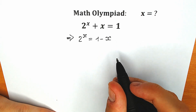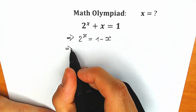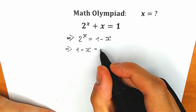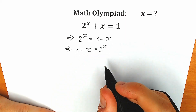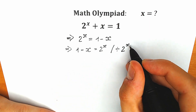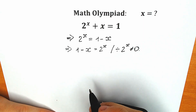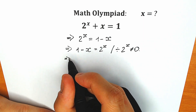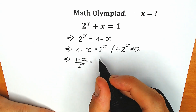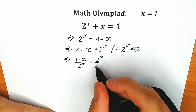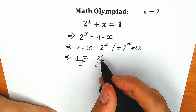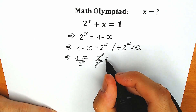Now let's divide both sides by 2 to the power x, but before this let's change position. For better understanding, let's write 1 minus x on the left side and 2 to the x on the right side. We can divide both sides by 2 to the power x — it is not equal to zero, so we can easily do this. On the right side we can cancel 2 to the power x, leaving only 1.